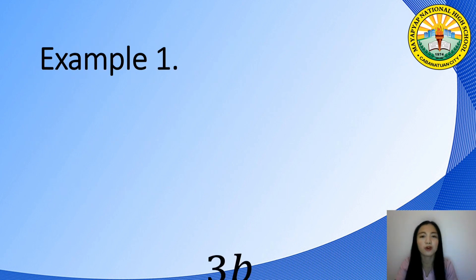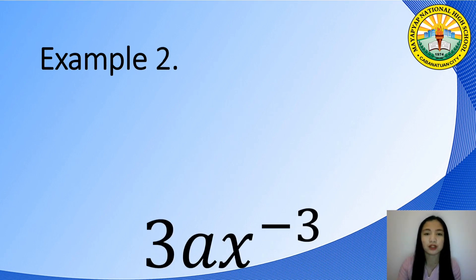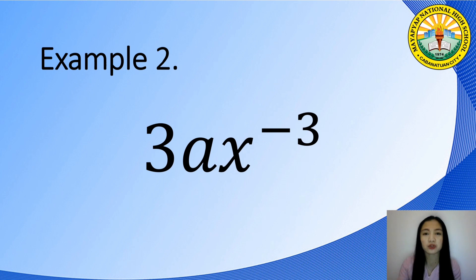For example, 3b over a plus c. Be sure that when you add the values of a and c in the denominator, its value is not equal to 0. How about this example: 3ax raised to negative 3. Can we say that this is a Rational Algebraic Expression? By mere looking at it, we might say that this is not a Rational Algebraic Expression because it is not written as a ratio or a fraction.